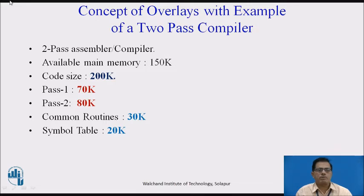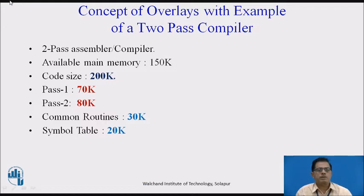The symbol table occupies 20k memory. The common routine, symbol table, overlays driver, and Pass 1 code are loaded into main memory for program execution to start. When Pass 1 has finished its work, Pass 2 code is loaded on top of the Pass 1 code because that code is no longer needed. This way we can execute a 200k process in 150k of memory.